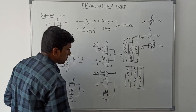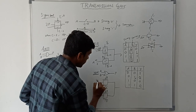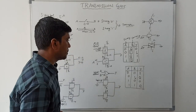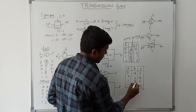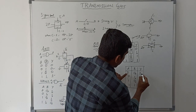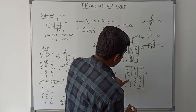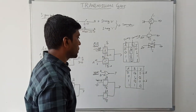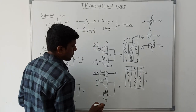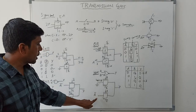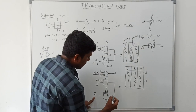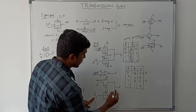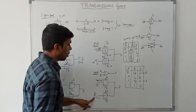The first transmission gate is connected to ground (logic 0). Whenever B equals 1, this logic 0 is connected to output. When B equals 0, the output equals A-bar (complement of A). The second transmission gate is connected to A-bar. Whenever B equals 0, this transistor turns on and A-bar value is transferred to output. If A-bar is 1, then 1 is transferred; if A-bar is 0, then 0 is transferred. This is the basic implementation of logic gates using transmission gate.